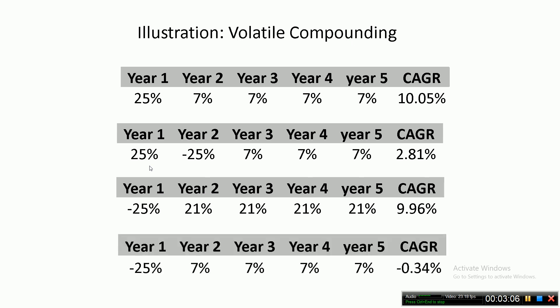As a final example, you get that minus 25% in the first year, decide equity is not for you, and move to fixed income getting 7% for the rest of the four years. Your CAGR will be minus 0.34%.